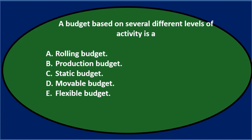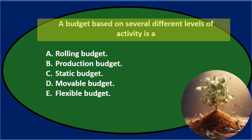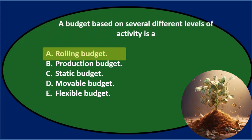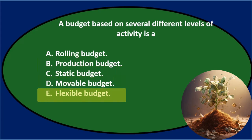First question: A budget based on several different levels of activity is — A. Rolling budget, B. Production budget, C. Static budget, D. Movable budget, or E. Flexible budget.